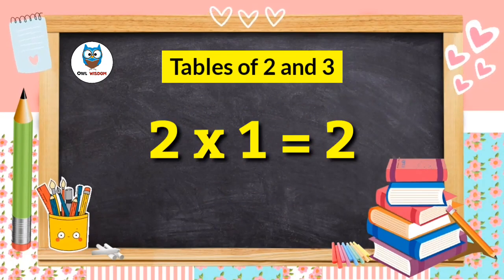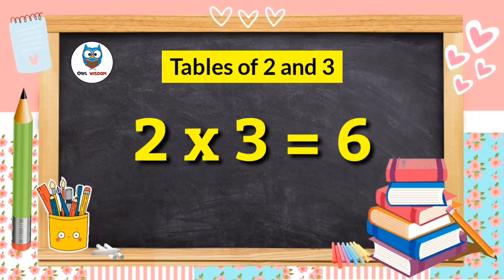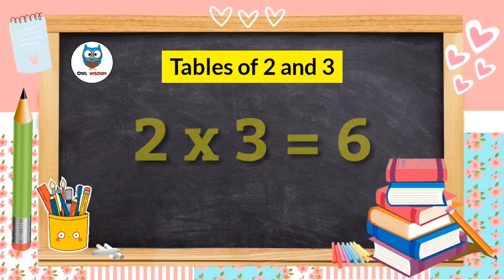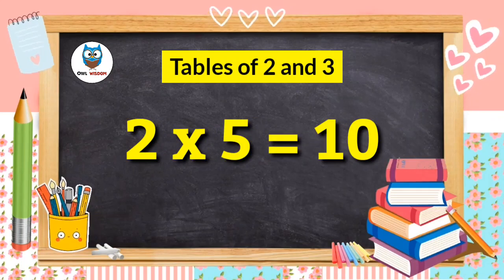2 1s are 2. 2 2s are 4. 2 3s are 6. 2 4s are 8. 2 5s are 10.